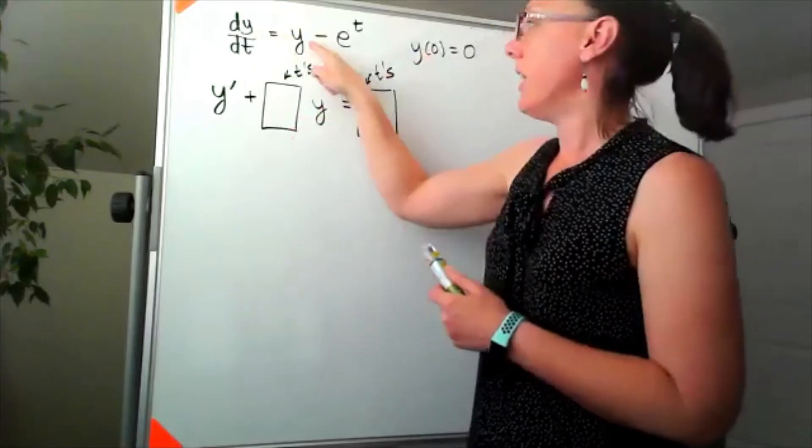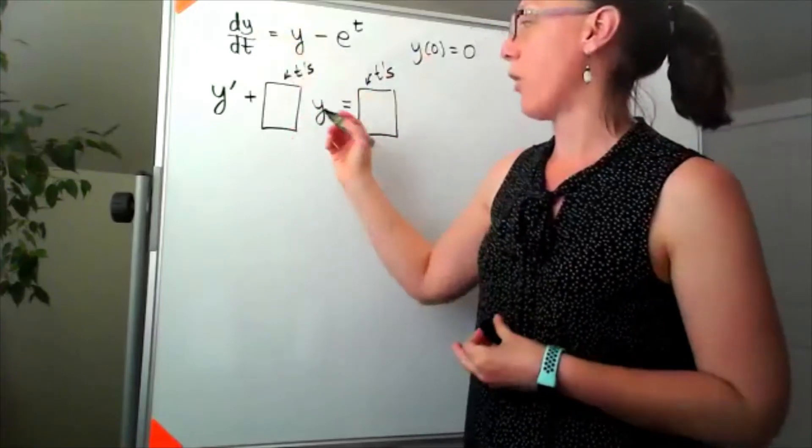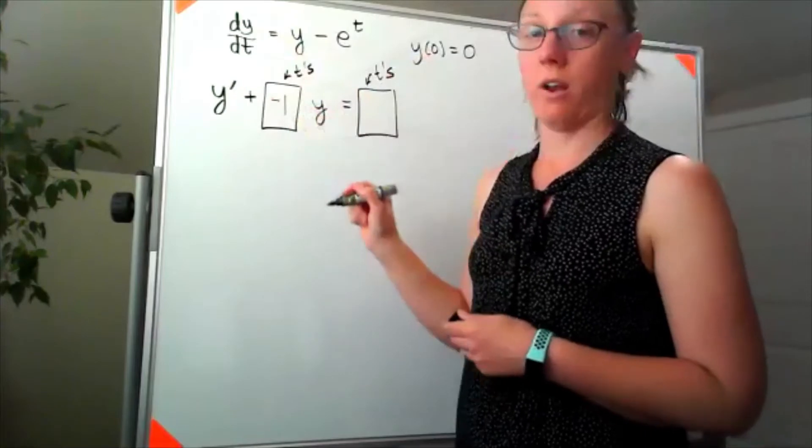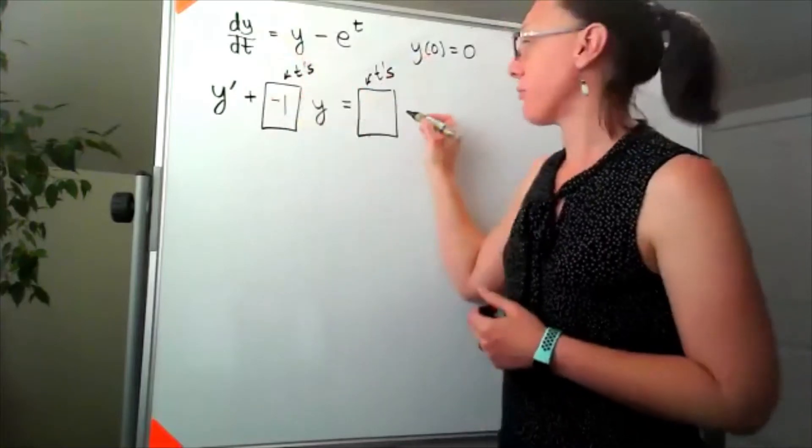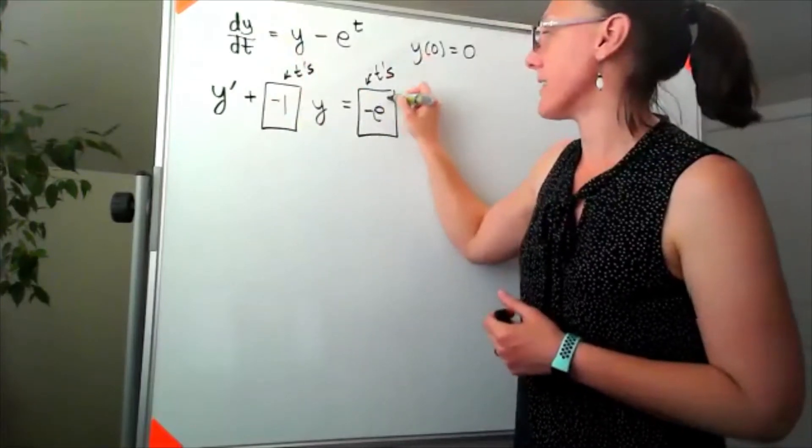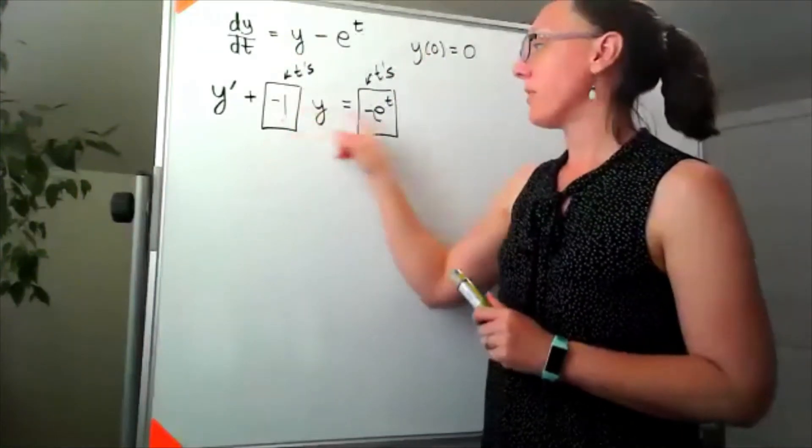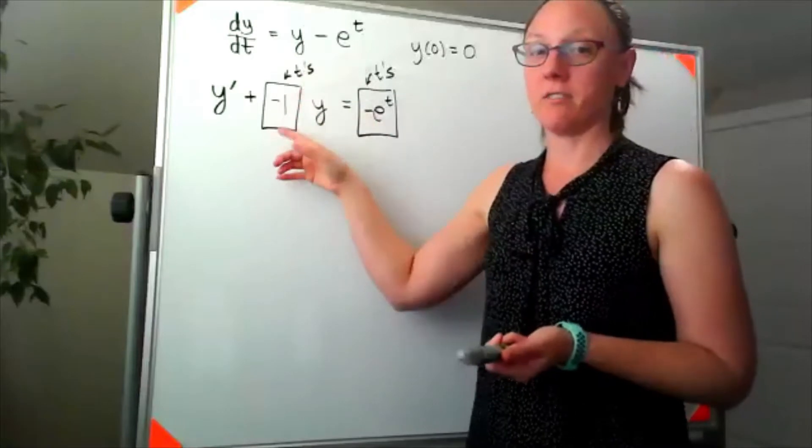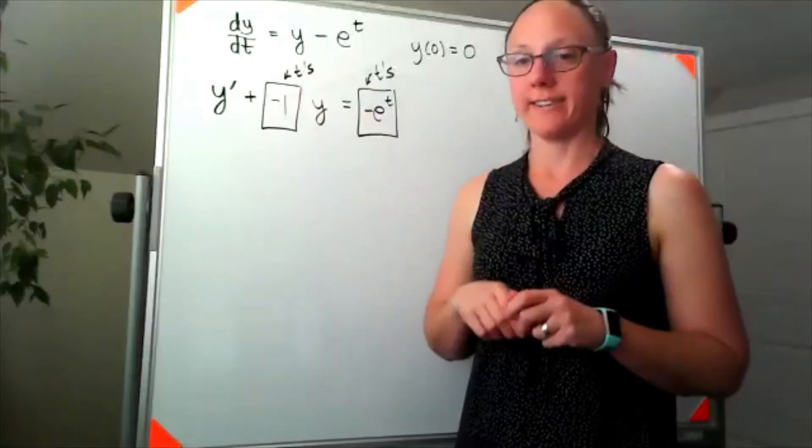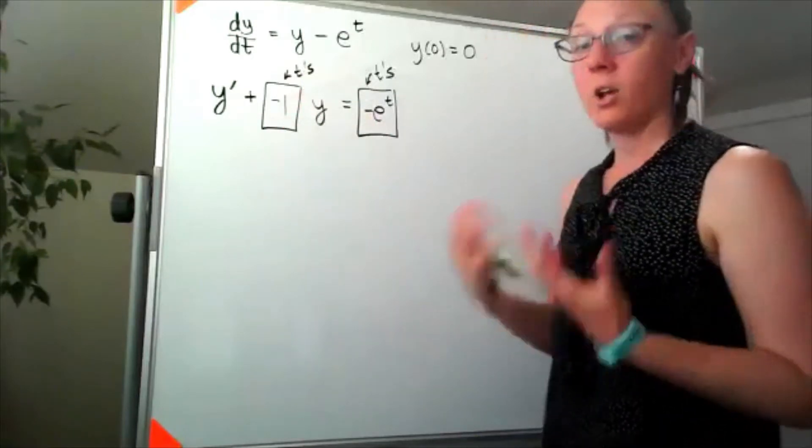So if I think about that equation and trying to put it into this standard form for the first order linear, I'm going to have to subtract that y over. So I'd have a negative one y and I'd be left with negative e to the t over here. So this is fine, it's in our standard form. Both of these are technically functions of t, even though this is just a constant.